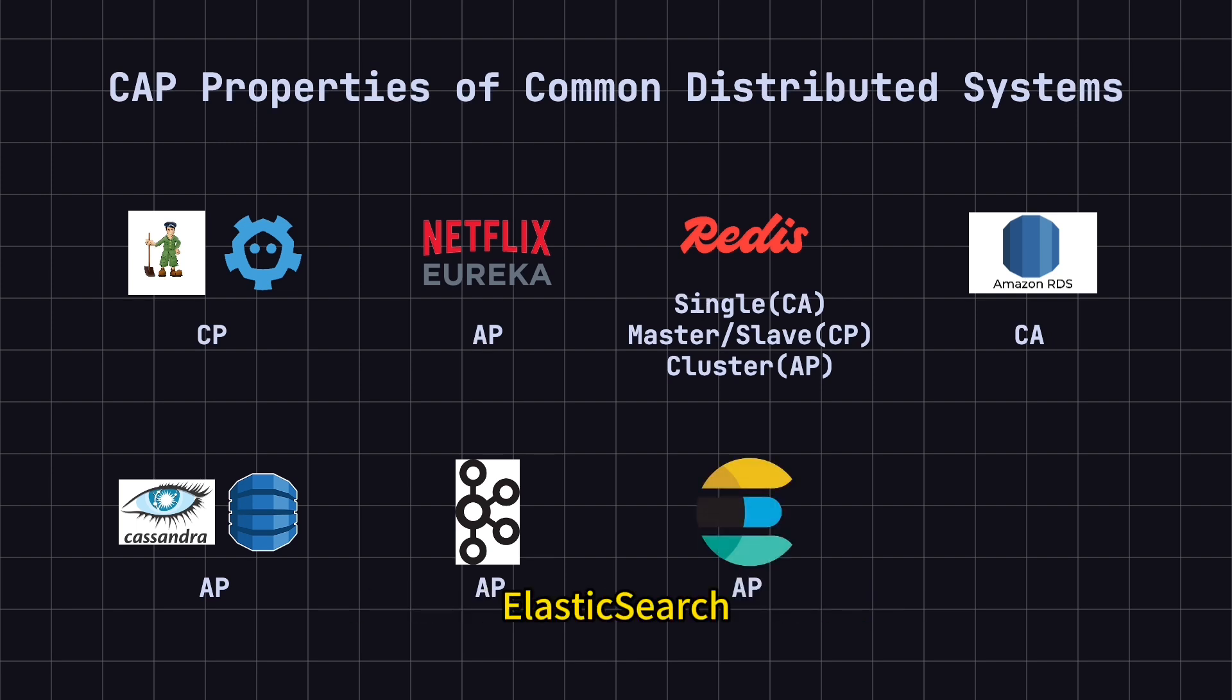Seventh, Elasticsearch. Elasticsearch, the distributed search engine, is more of an AP system by default, prioritizing availability and partition tolerance. However, through configuration, like setting the number of replicas, refresh intervals, etc., it can be tuned to improve consistency, approaching a CP system.